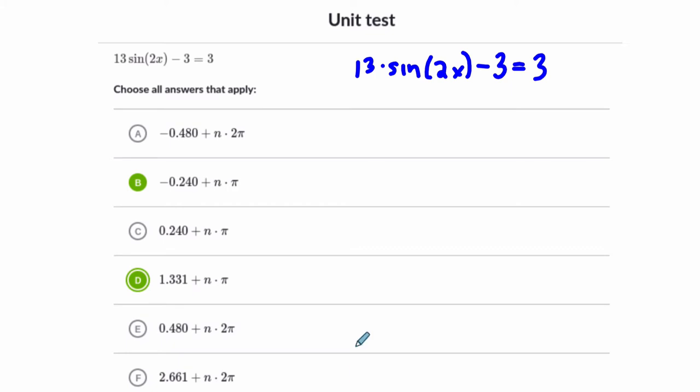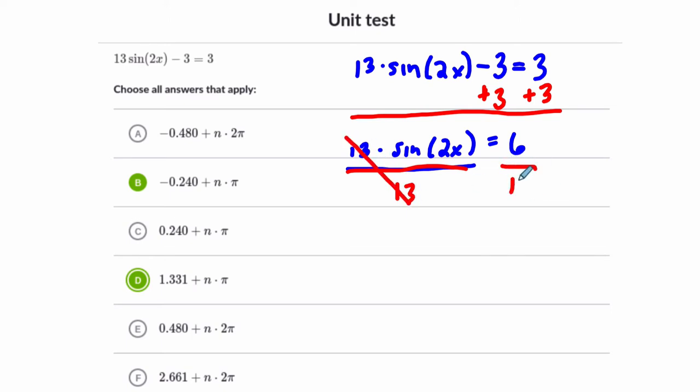How do we do that? Just like in any algebraic equation, I'm going to start by adding 3 here. I'm solving for x. I'm going to balance both sides of my equation. That will get me 13 times the sine of 2x. Negative 3 plus 3 is 0, and 3 plus 3 is 6. Then I'm going to divide both sides by 13. So I am going to divide by 13 on the left. These will cancel out and divide by 13 on the right. So now I'm left with the sine of 2x equals 6 thirteenths.